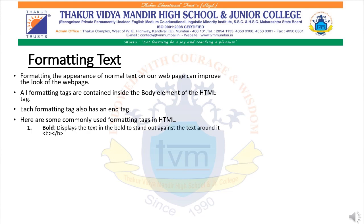First is the bold tag. Bold tag starts with an open B tag and ends with a close B tag. The text written between these tags becomes bold to stand out against the text around it. Italic tag starts with an open I tag and ends with a closed I tag. The text written between them is slightly angled.